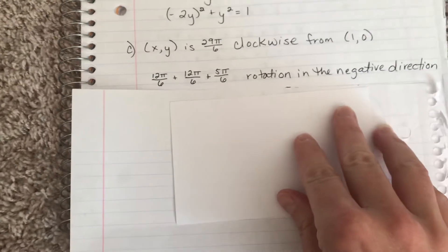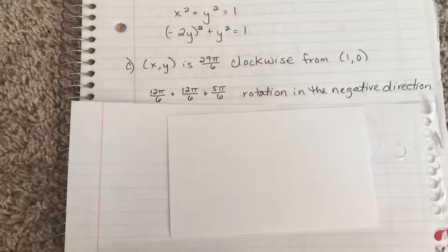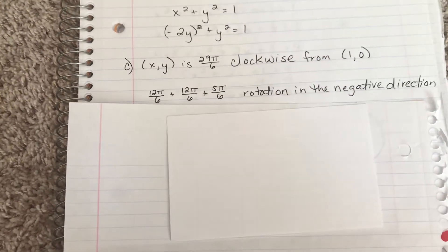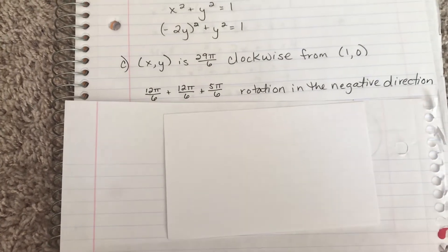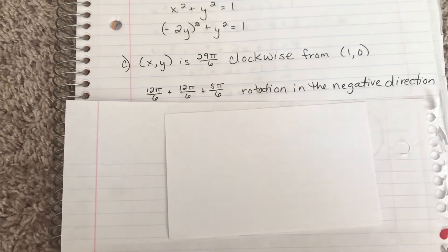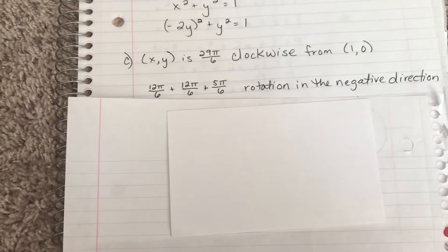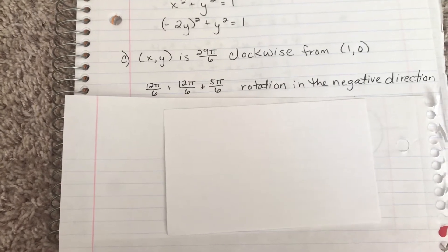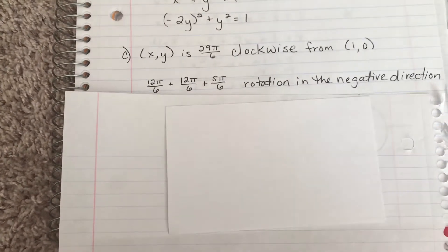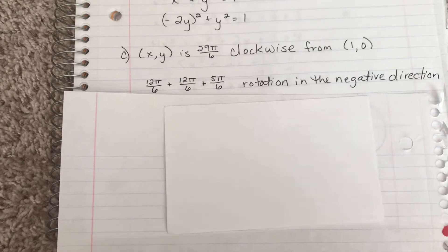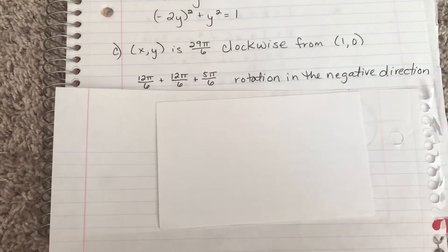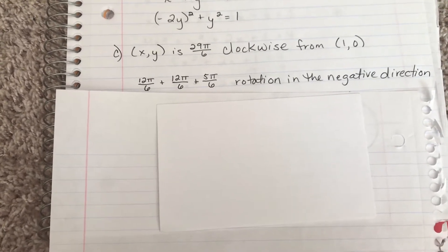For part c, 29π/6 is rotating around a couple of different times and then settling. To go around the circle one time is to go 2π. Since my denominator is 6, I thought about how to make 2π using a denominator of 6. So 12π/6 plus 12π/6 is 24π/6, so that's 4π, so that's twice around the circle.